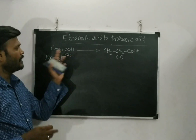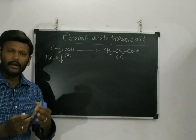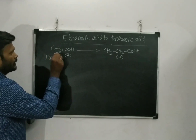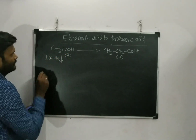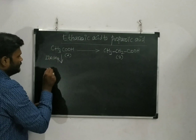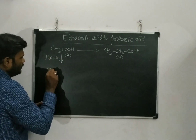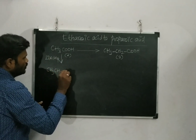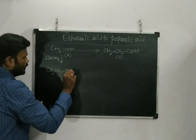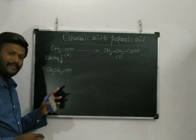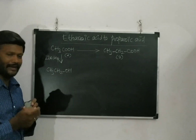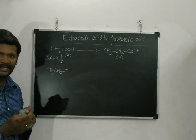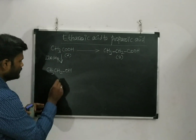This acid can be converted into the same carbon-number alcohol. So I will get CH3, CH2, OH — that is ethanol. Once I got this alcohol product CH3CH2OH, I proceed to the next step.